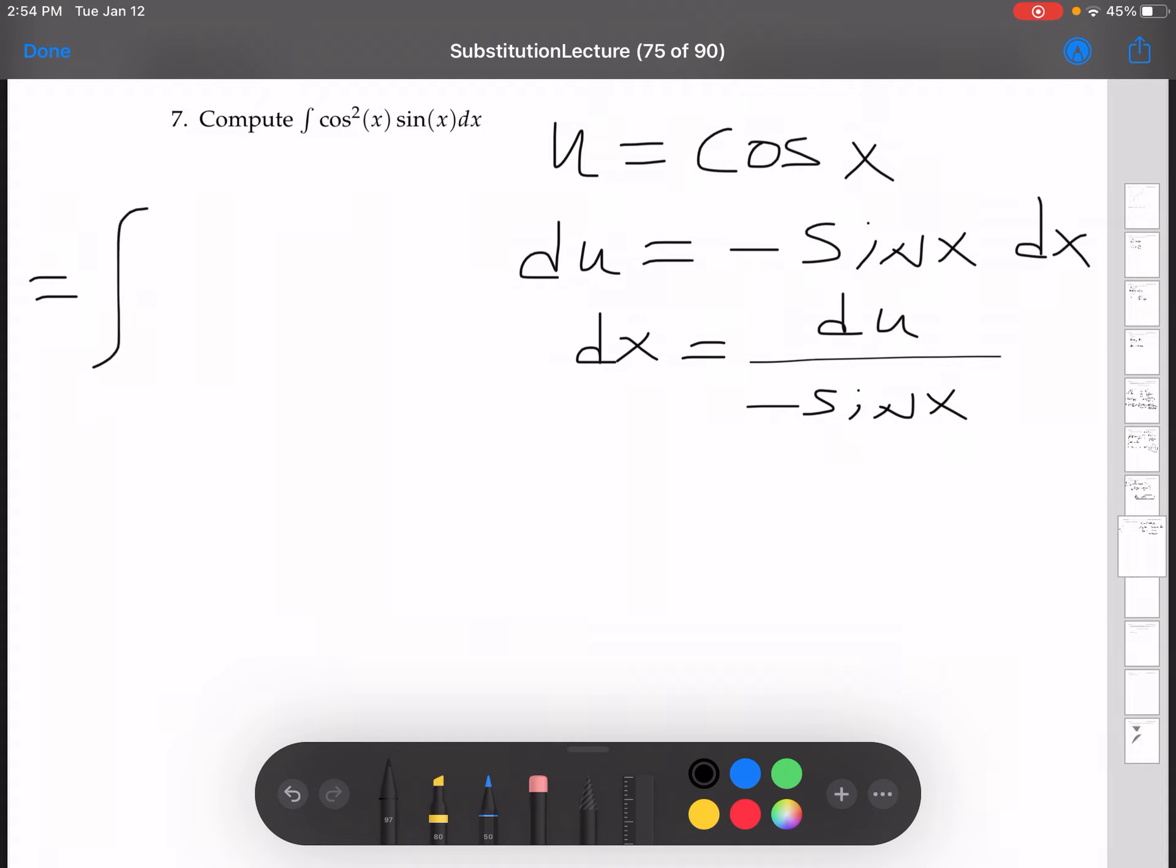So we have the integral of u squared sine x du over negative sine x. Those cancel.